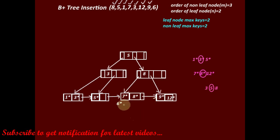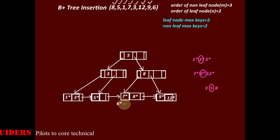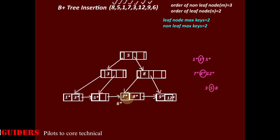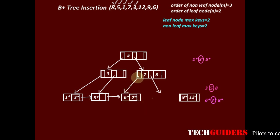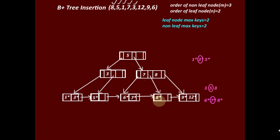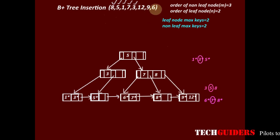To insert 6, start from the root: 6 is greater than 5 and less than 8, so we proceed to the leaf node containing 7 and 8. There is no space, and 6 should occupy a position before 7, so an overflow occurs. Consider all entries in sorted order: 6, 7, 8. The mid key is 7, which moves to the parent before 8. This node splits into 2: 6 and 7 occupy the left node and 8 occupies the right node. Key 7 is pushed to the parent; entries with keys less than or equal to 7 occupy the left node and entries with keys greater than 7 occupy the right node. Key 7 is the maximum of the leaf node keys in its left subtree, and key 8 is the maximum in its left subtree. This is the final B+ tree for this insertion sequence.